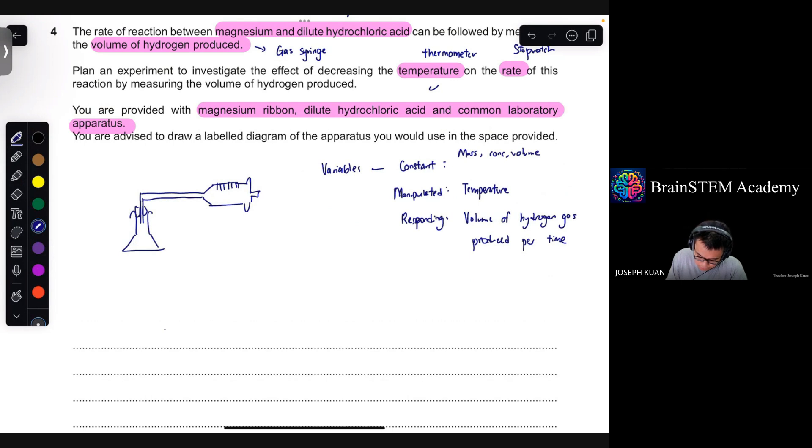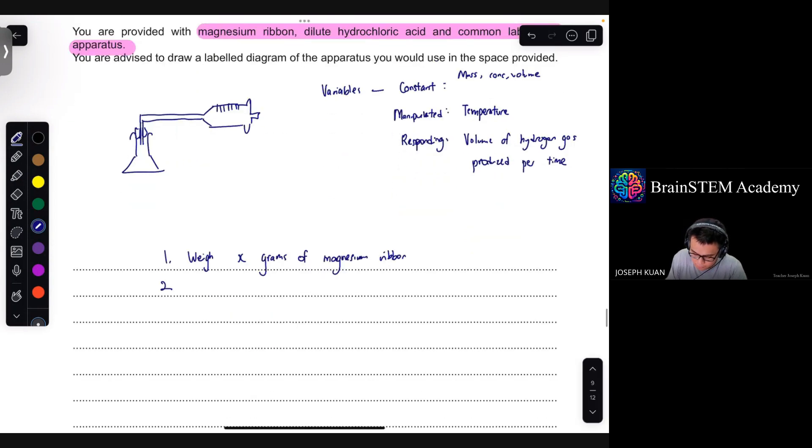Let's do it step by step. So first you must weigh a specific amount of magnesium ribbon. We weigh x grams of magnesium ribbon. Followed by, since the dilute hydrochloric acid is already provided, so you just use a specific volume of hydrochloric acid. And then with that you mix them together and then connect them via the delivery tube to the gas syringe. The moment you add the magnesium ribbon into the solution, you should straight away close it.